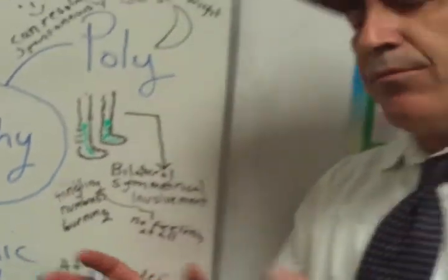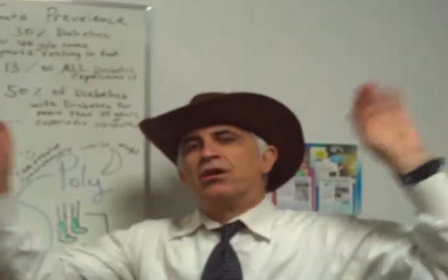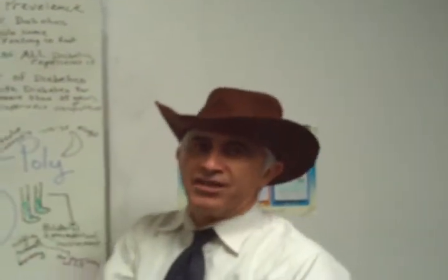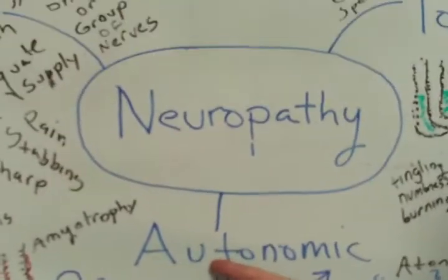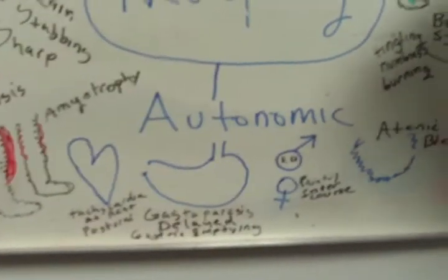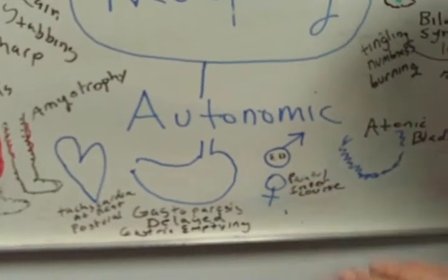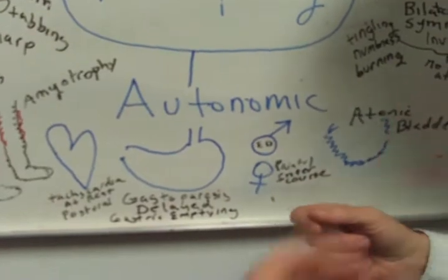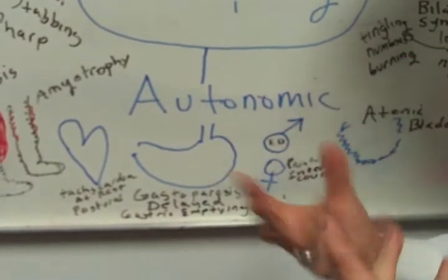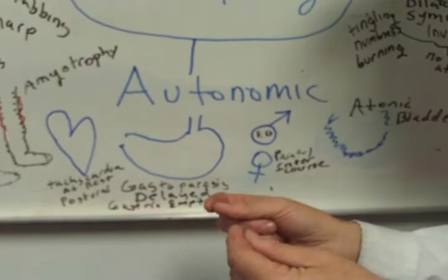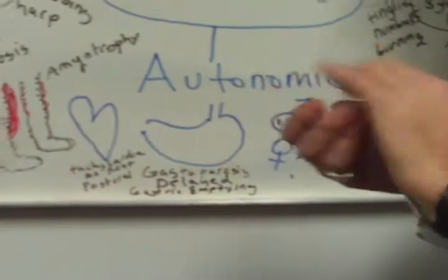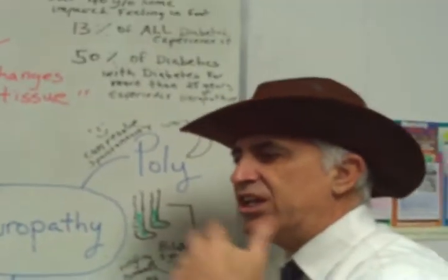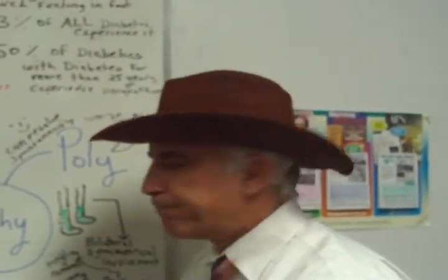Now we get to one that's a little more involved — autonomic neuropathy. They call it autonomic because it affects the autonomic nervous system. Remember, our autonomic nervous system includes the sympathetic nervous system, which speeds up the body — the fight-or-flight response — and the parasympathetic nervous system, which helps us with urinating, digestion, eating, and that sort of thing.